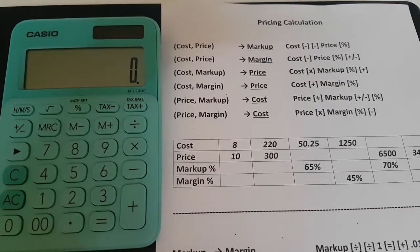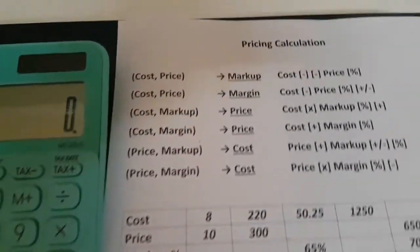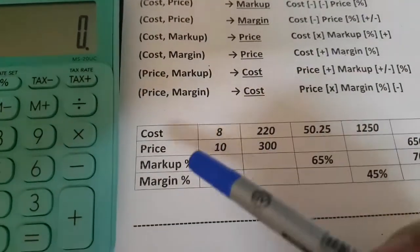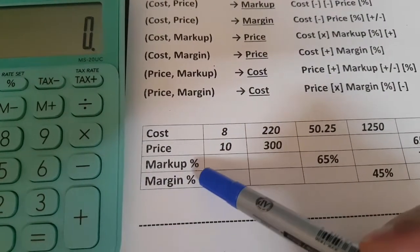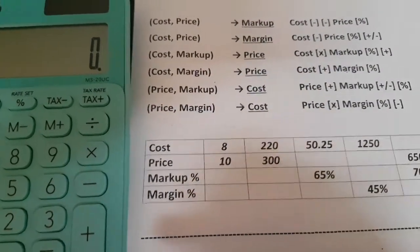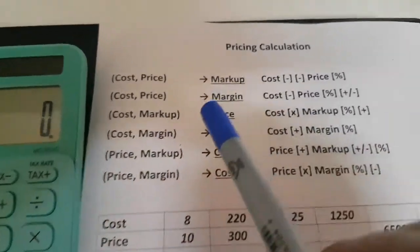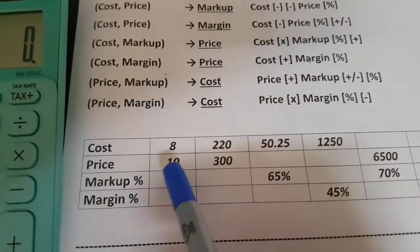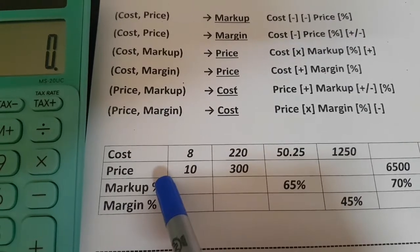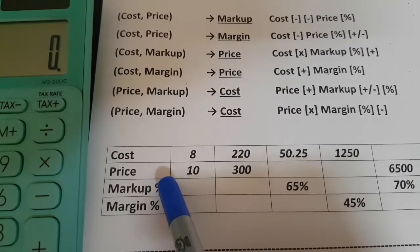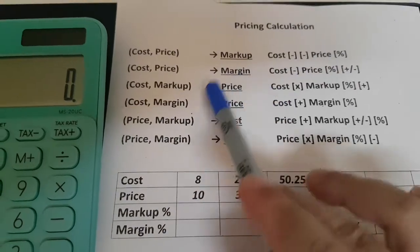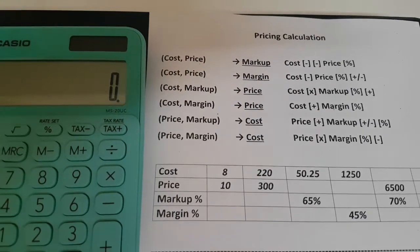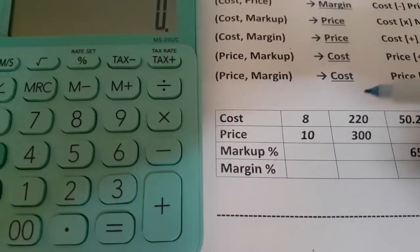Hello everyone, in this clip I will demonstrate how to calculate pricing. The pricing calculation is based on cost, selling price, markup, and margin. I have steps depending on each condition — for example, if you only know the cost and the price, how do you calculate the markup and margin? Let's try this out and see how it works.